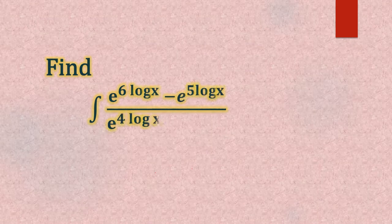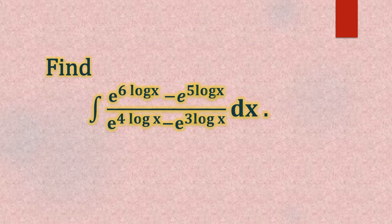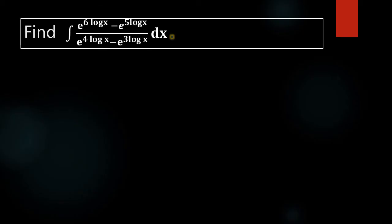Find integral e raise to 6 log x minus e raise to 5 log x whole divided by e raise to 4 log x minus e raise to 3 log x dx. We have to find the value of the given integral here.